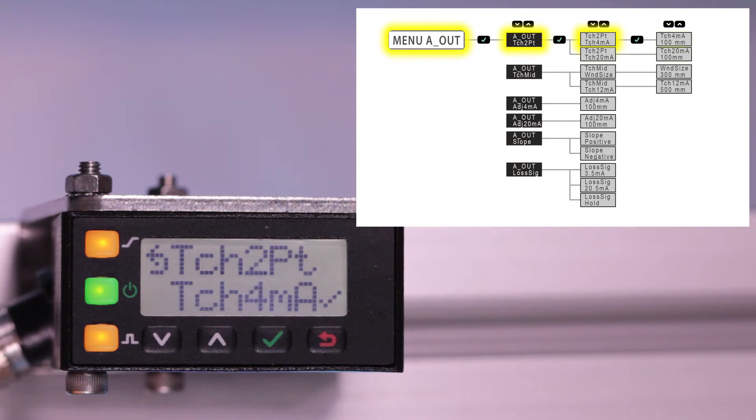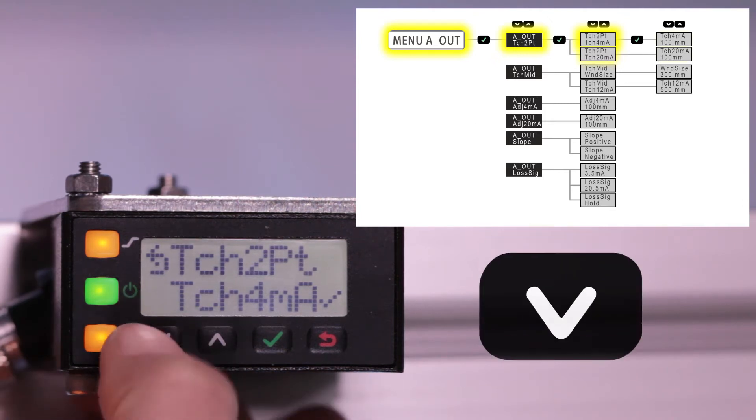When using 2-point Teach, the 4 and 20mA limits are taught separately, so it is possible to teach both limits or just reteach a single limit while leaving the other unchanged. The first option seen within the Teach 2-point menu is Teach 4mA. Click down to Teach 20mA.